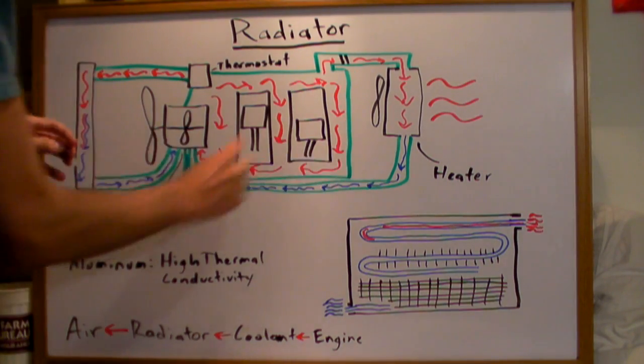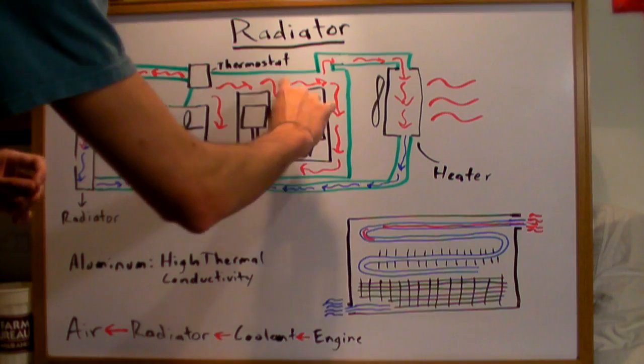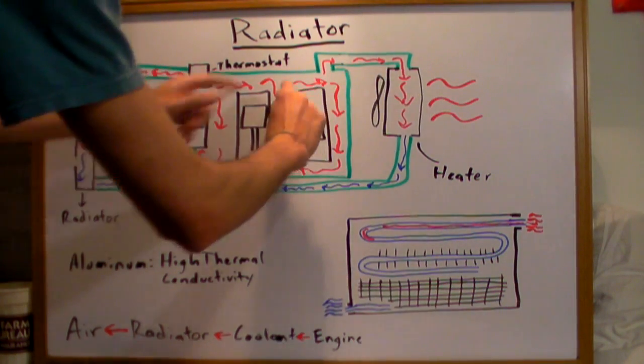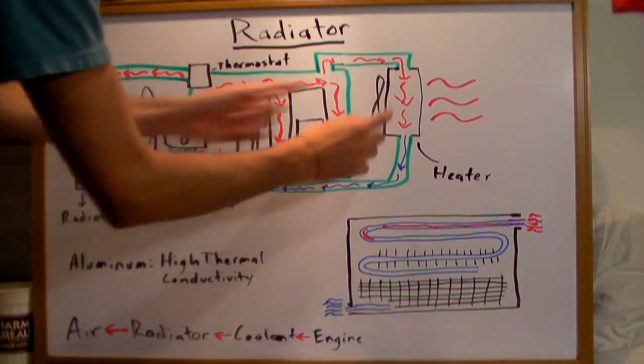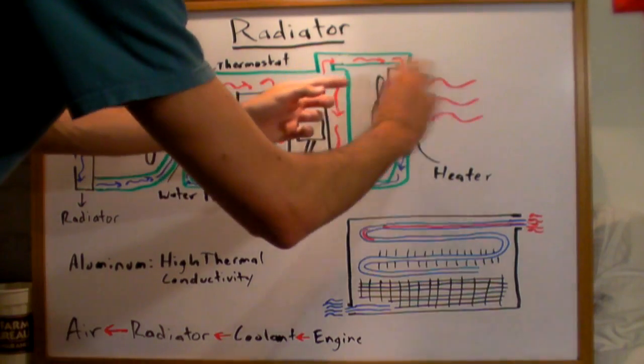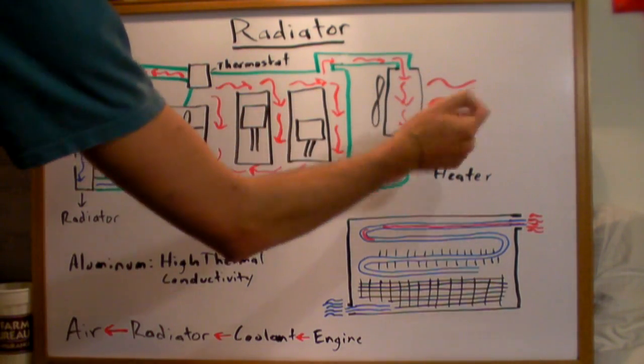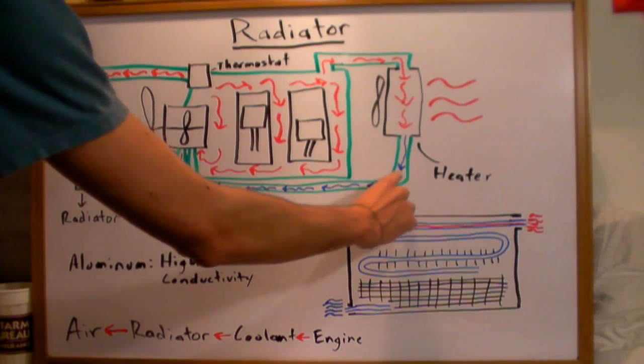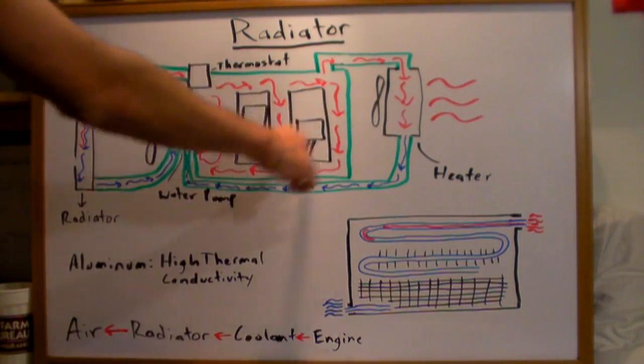Now if you turn your heater on, it's going to open up a valve right here and that's going to allow this coolant to come in. It's going to be hot and it's going to come through basically another radiator, and you're going to blow a fan on that. So this hot air, the air passing over this is going to heat up and then go into your car. Now that's going to come out and then it's going to cool that coolant, and that's going to go straight back to the water pump and recirculate through your engine.